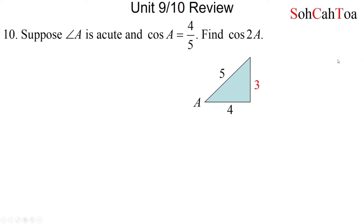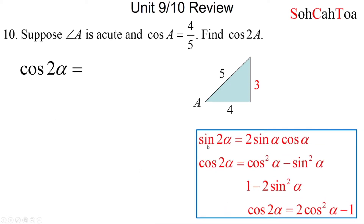With this diagram I can answer really cool things, like what is cosine of 2A — a double angle formula. Here are our double angle formulas: sine of 2α equals 2 sine α cosine α. For cosine of 2α we have three identities: cos²α minus sin²α; 1 minus 2sin²α; and 2cos²α minus 1.